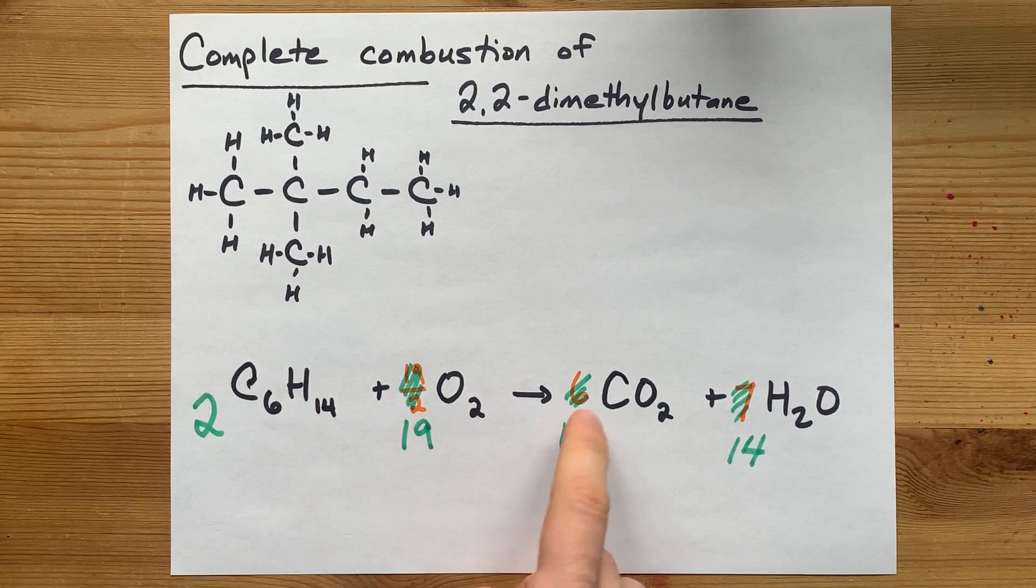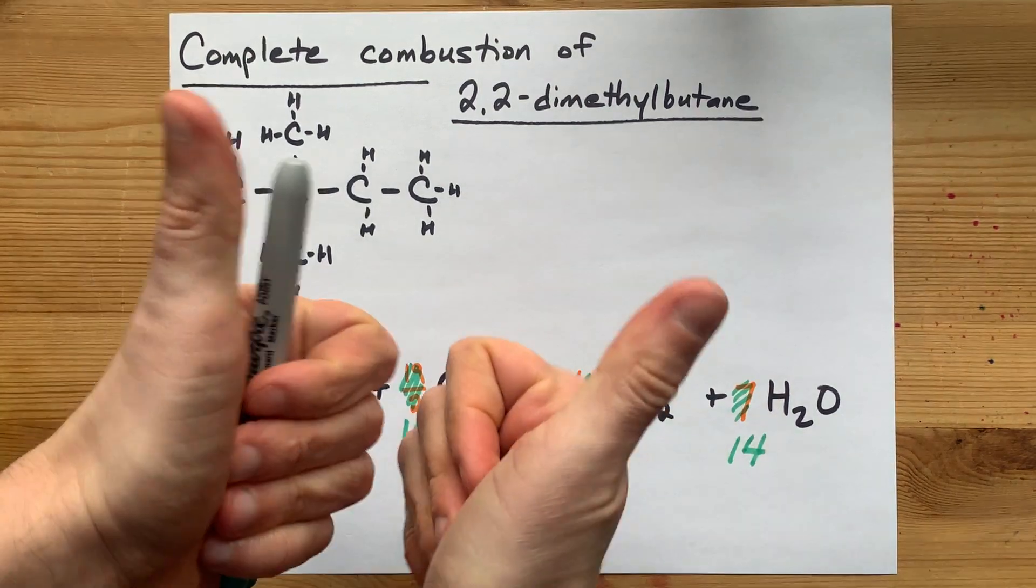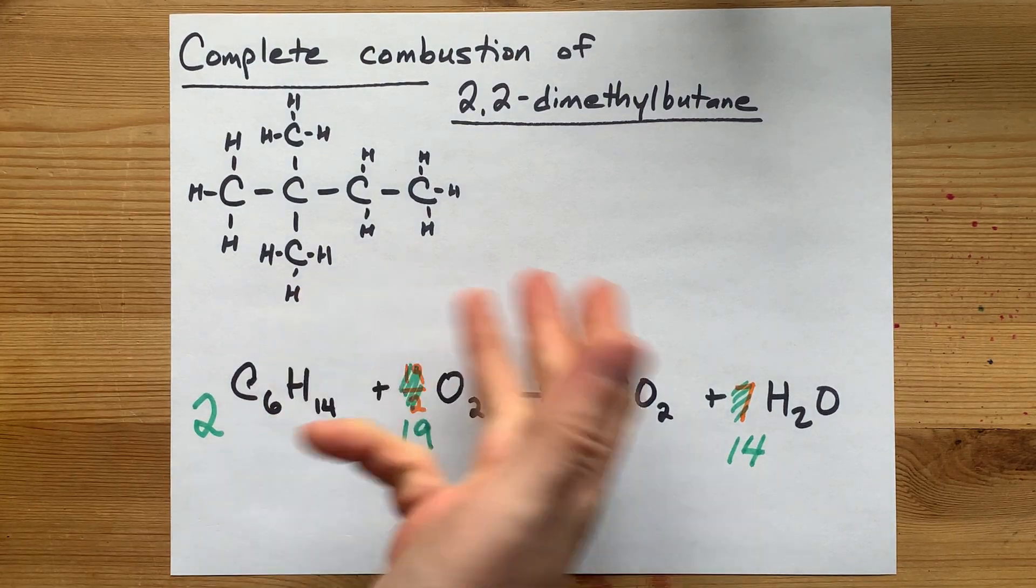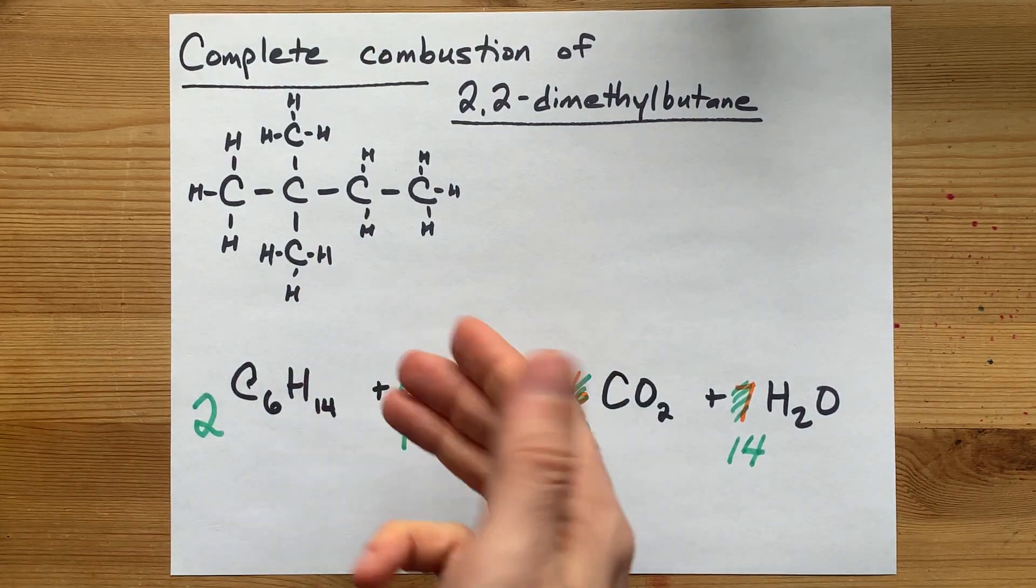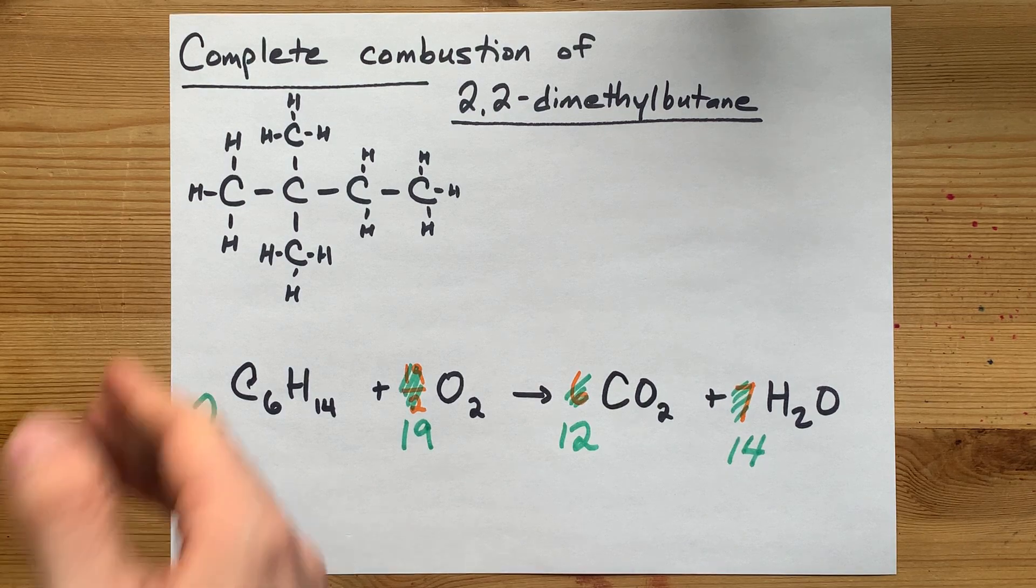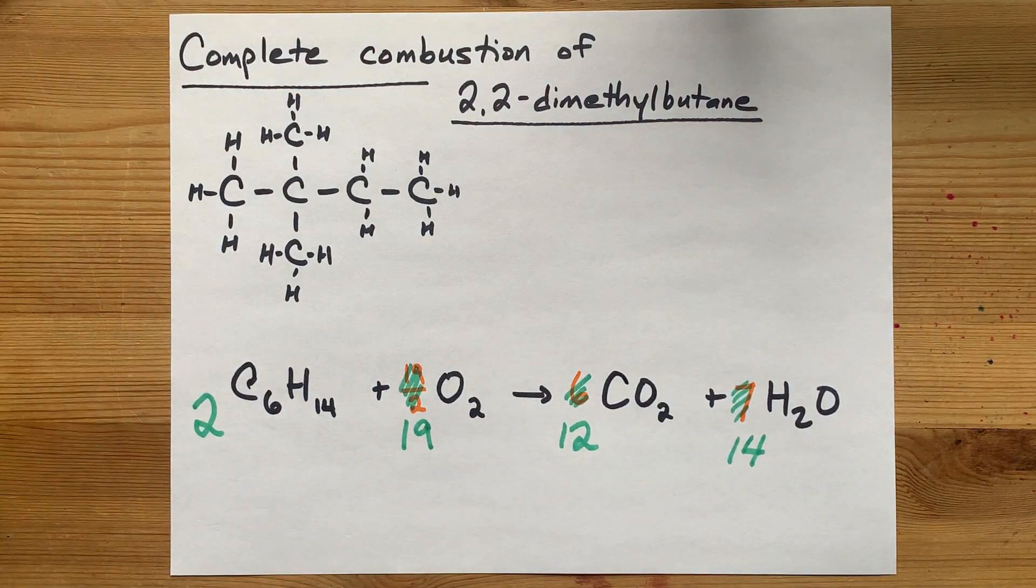1, 19 over 2, 6, and 7 is also a balanced equation. Don't let anyone tell you it's not. But if you prefer whole numbers, this is the way to go. You're welcome and best of luck.